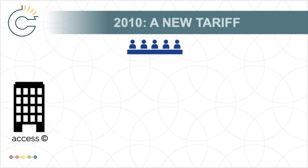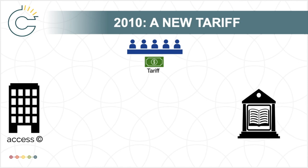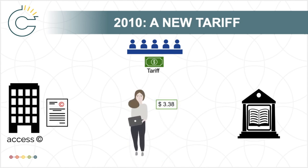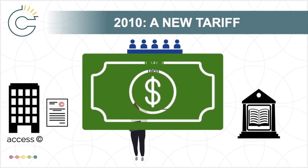In March of 2010, Access Copyright proposed a new tariff for its client universities and colleges with the Copyright Board. If approved, Access Copyright would be allowed to include this rate in their license agreements. The new tariff was a considerable increase over previous agreements — moving from a $3.38 fee per full-time enrolled student with additional fees per page copied, to a proposed $45 per full-time student for universities or $35 for colleges, without the additional per-page fee. For universities like York, this meant a significant increase in fees.